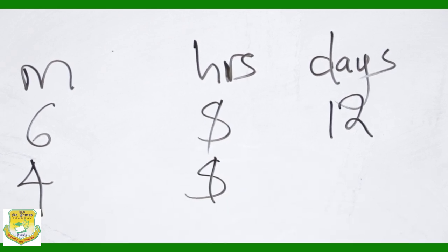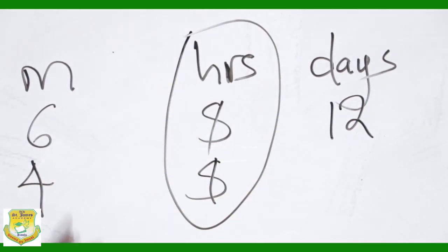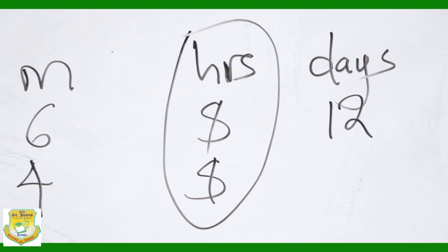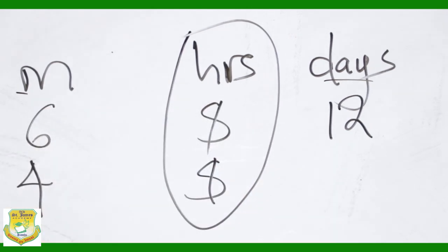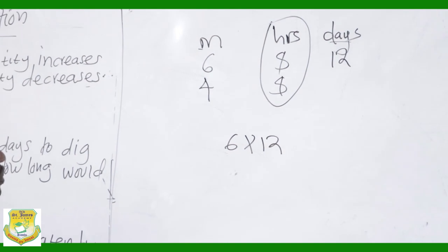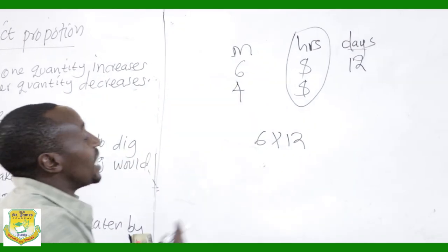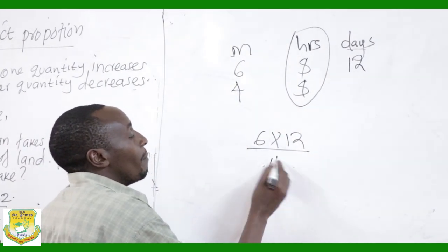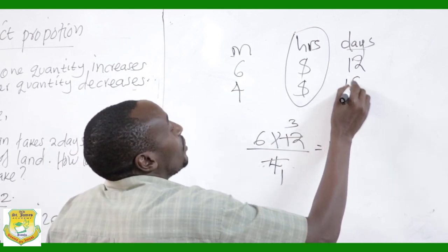Because the number of hours is the same, we use only the number of men and the number of days. We give this work to one person. One person will take 6 times 12 days. They are not alone — there are 4 men, so we divide the total by 4. Six times 12 divided by 4: cancelling gives 18. So 4 men will take 18 days.